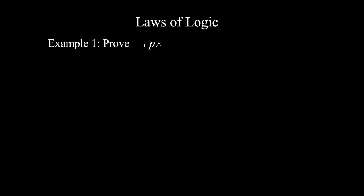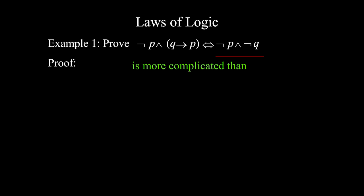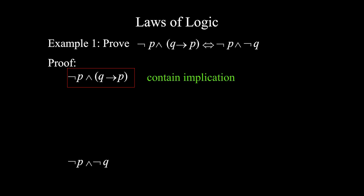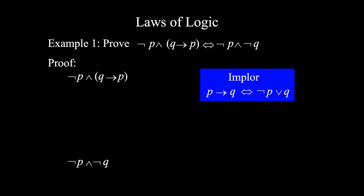Number 1. Prove that ¬p ∧ (q→p) is equivalent to ¬p ∧ ¬q. The left side is more complicated, so we start with ¬p ∧ (q→p) and try to get to ¬p ∧ ¬q. Analyzing the left side, it contains an implication. So ¬p ∧ (q→p) is equivalent to ¬p ∧ (¬q ∨ p).